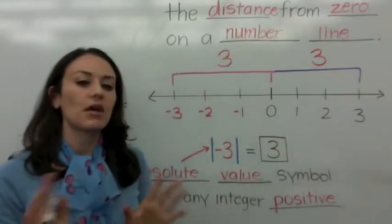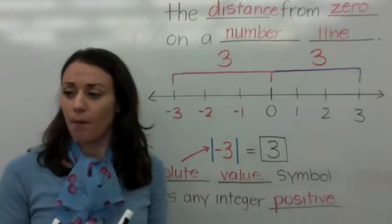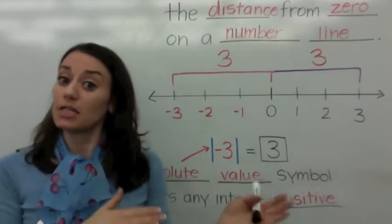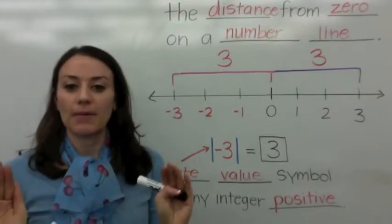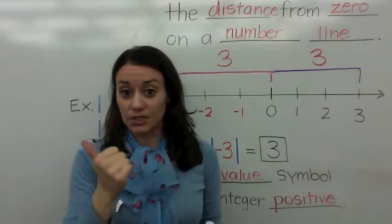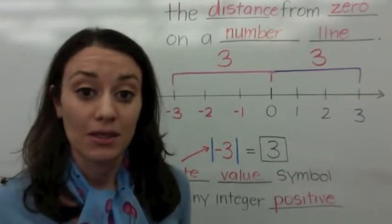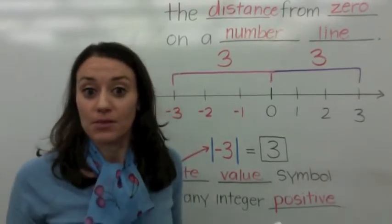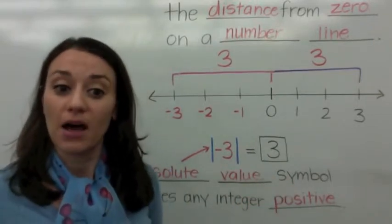I don't want you to think 'opposite,' even though the opposite of negative 3 is positive 3. I'm talking about if you go backwards distance-wise three steps, that's actually just going three steps. And three, since it's distance, it's positive.